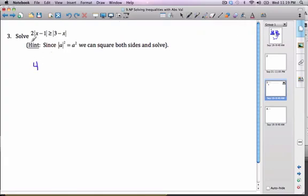So I am then going to square both sides. I'm going to square this side and this side. So I get 4, parenthesis, x minus 1 squared, less than or equal to 3 minus x squared.